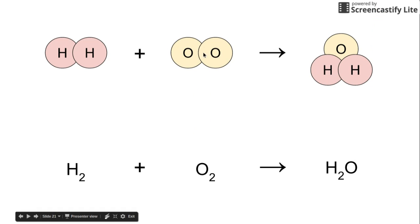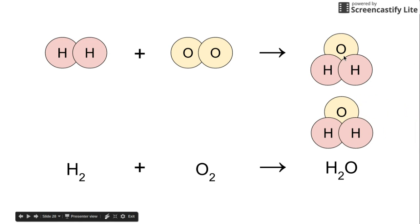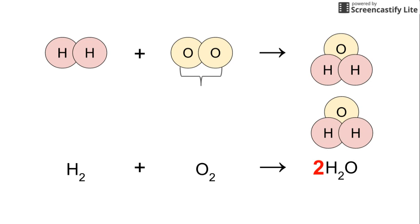We need to balance the two oxygens on the reactant side with the one on the product side, which means we need to add in more oxygen — and the only way to do that is by adding another water molecule. Now we've got two molecules of water, and that's why we need to add a coefficient of 2 in front. This 2 means we have two of the entire molecule, so we have one molecule of water here and another there.